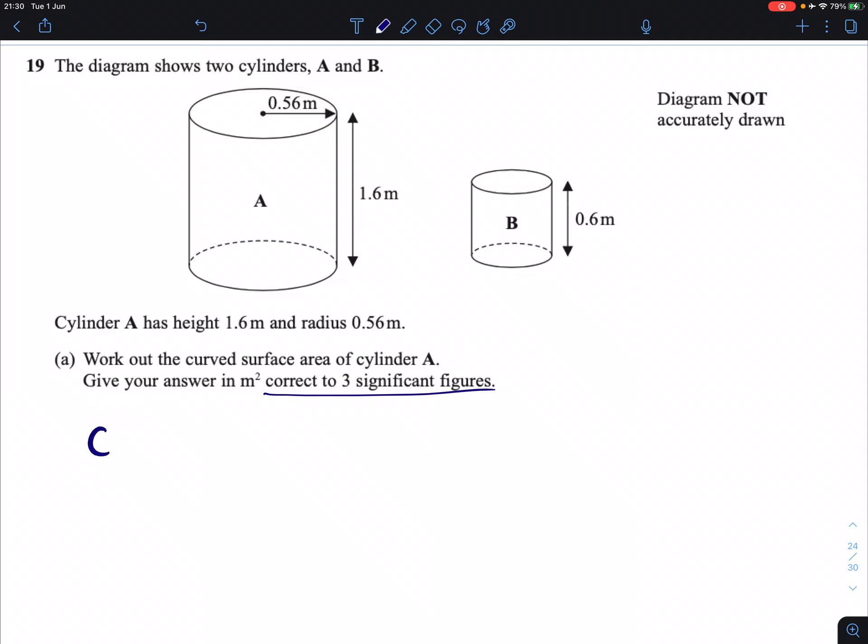So, curved surface area of that cylinder, of any cylinder, you have this in your formula sheet, is 2 times pi times r times h,